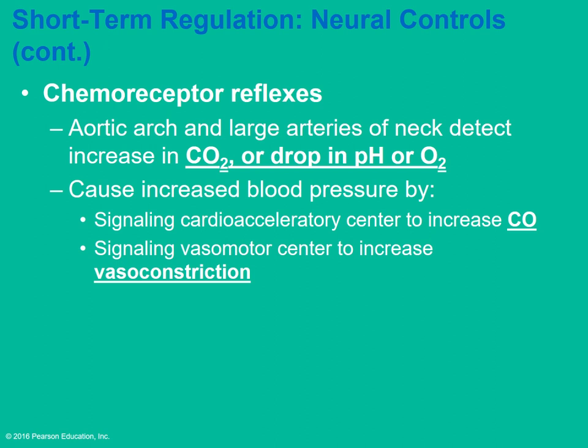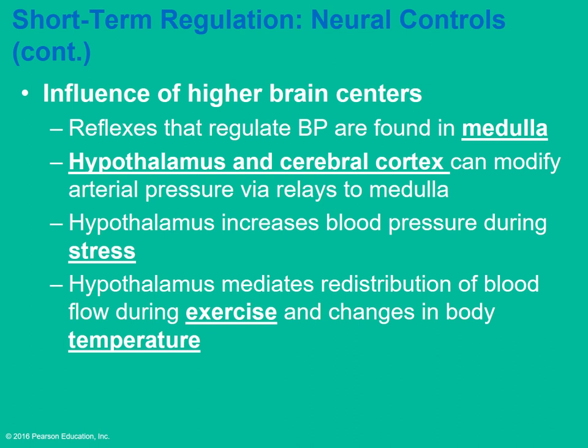Chemoreceptors are located in the aortic arch and large arteries of the neck. They can detect an increase in carbon dioxide, a drop in pH indicating blood becoming too acidic, or a drop in oxygen, and signal a change in response. Much of this involves the medulla where cardiovascular centers are located, as well as the hypothalamus which regulates homeostasis. When under stress, blood pressure tends to go up due to hypothalamic regulation.